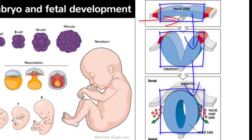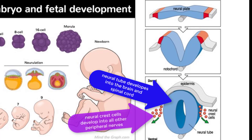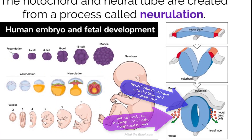Once developed, this neural tube will elongate and become the brain and spinal cord, while these neural crest cells, which were also once part of the ectoderm, developed to form the components of the peripheral nervous system.